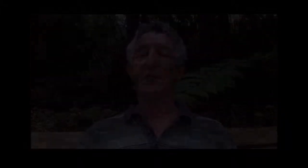A couple of suggestions for things not covered in this MOOC. Filtered classifier and association rules, the a priori association rule learner. And as I said before, maybe we'll produce a follow-up MOOC and include topics like this in it.